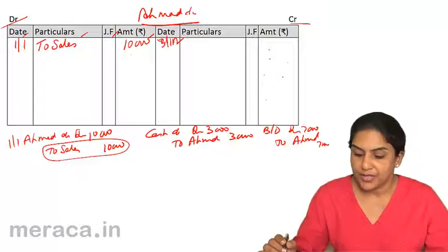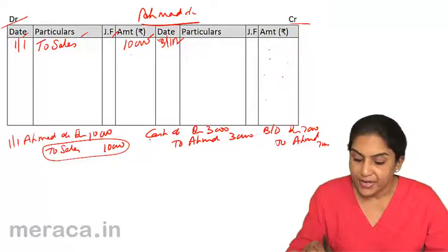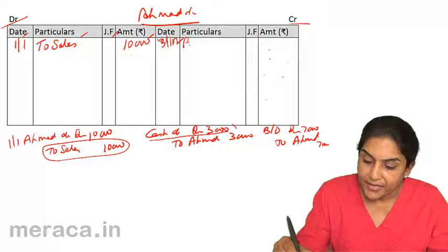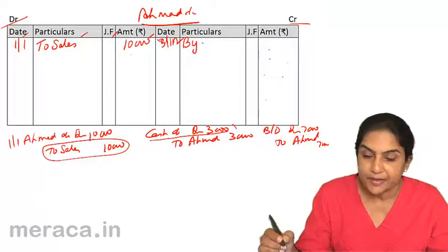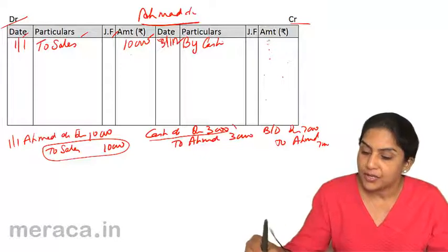So account is credited. I come to the credit side. And credit side, what will I write now? I will write the corresponding account. That is cash. By convention, I write by cash. Amount of 3,000.